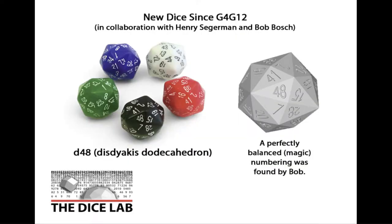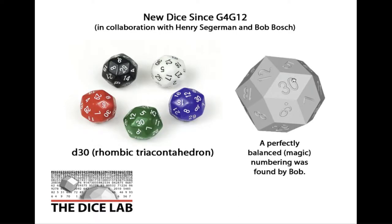New dice since G4G12: we have a D48 that's based on a disdyakis dodecahedron. Bob Bosch found a perfect balanced numbering for that, so the faces sum up the same number around every vertex of the same type. We also have done the first perfectly balanced or magic numbered D30.